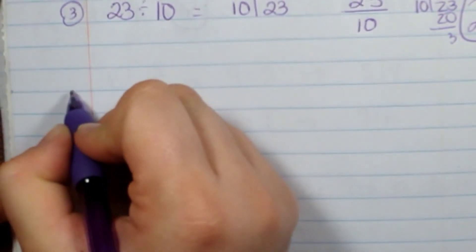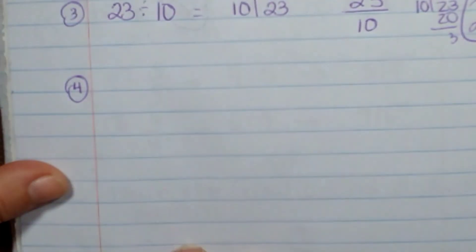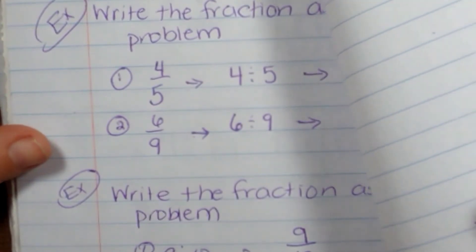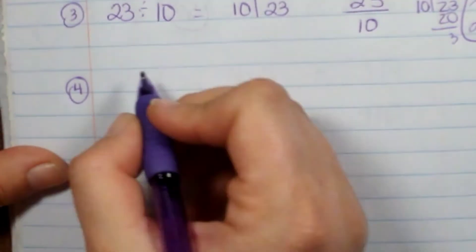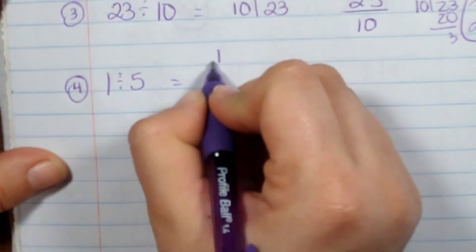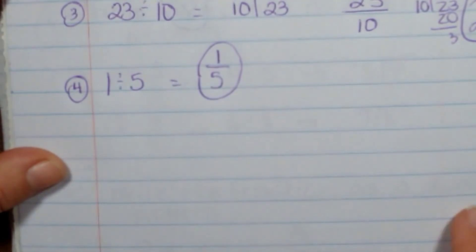Now my last one I want to do as an example before I move on to—like when we said four friends share two muffins, how much would they get? I'm going to do 1 divided by 5, which will be 1/5, and that would be my answer because that's a proper fraction.